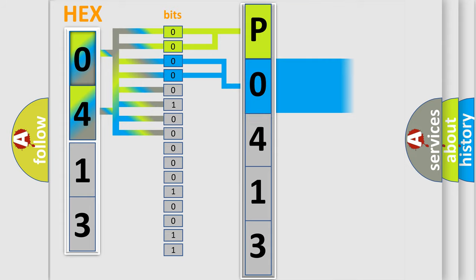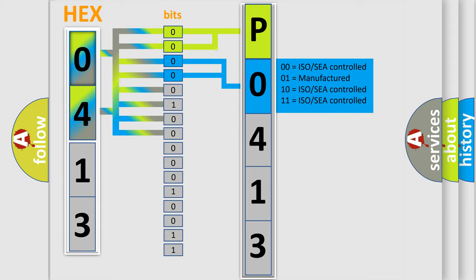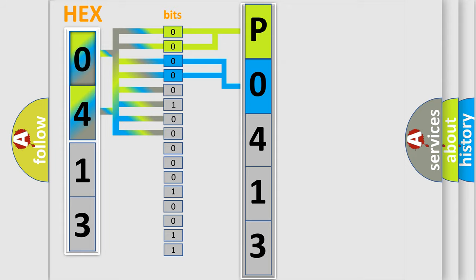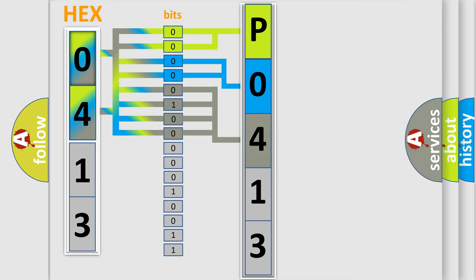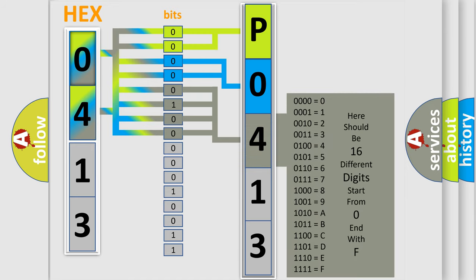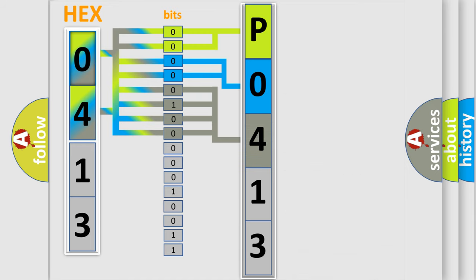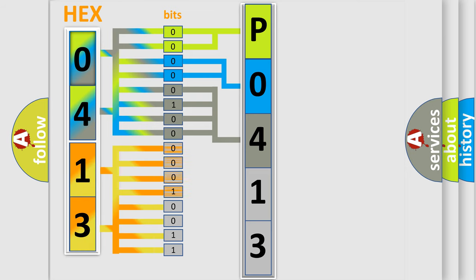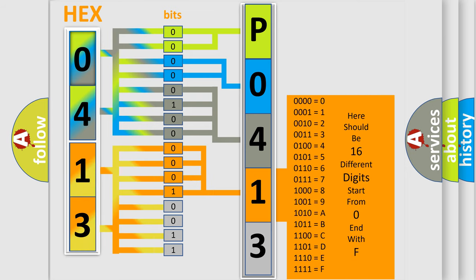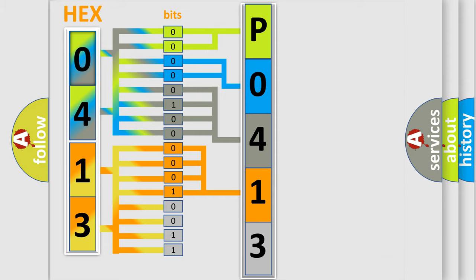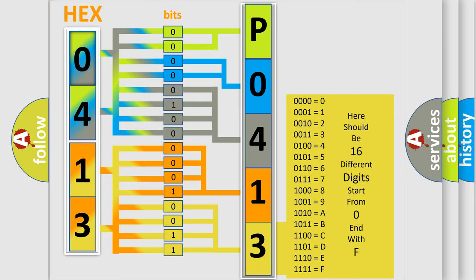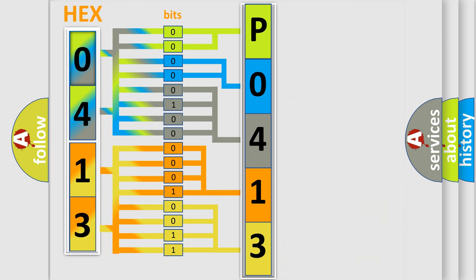The next two bits determine the second character. The last bits of the first byte define the third character of the code. The second byte is composed of a combination of eight bits. The first four bits determine the fourth character of the code, and the combination of the last four bits defines the fifth character. A single byte conceals 256 possible combinations.